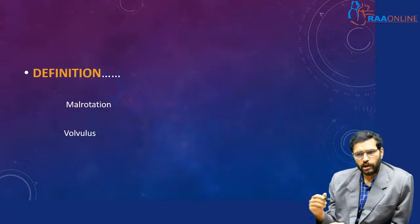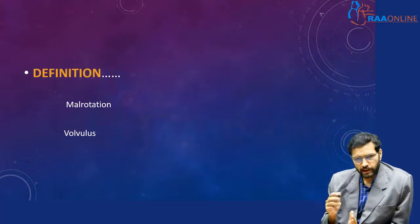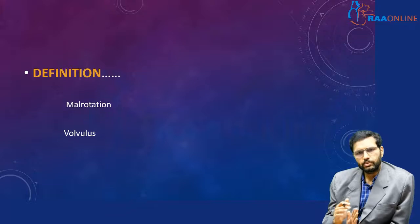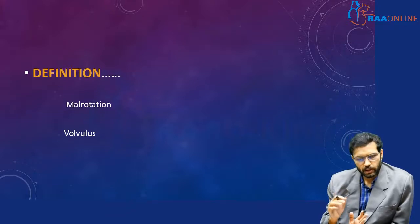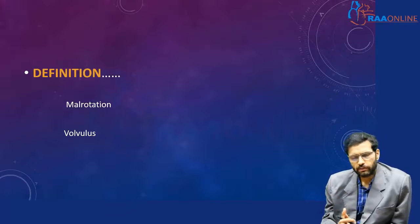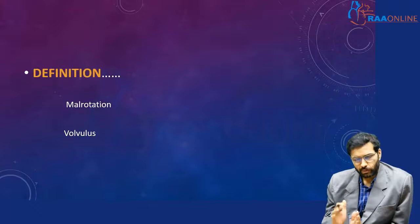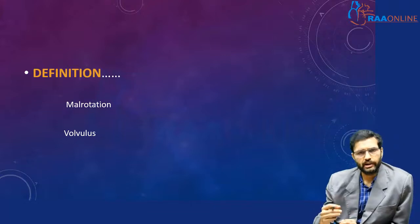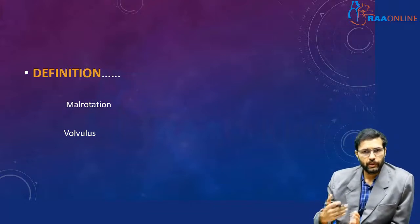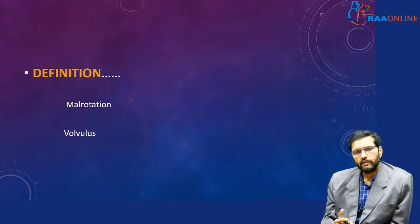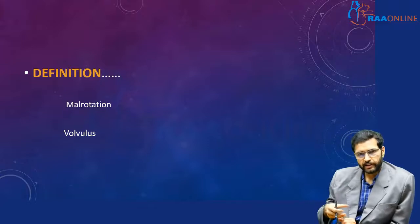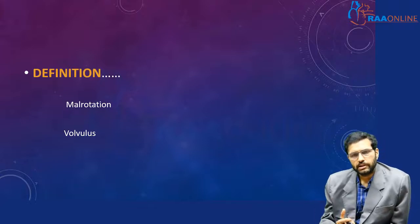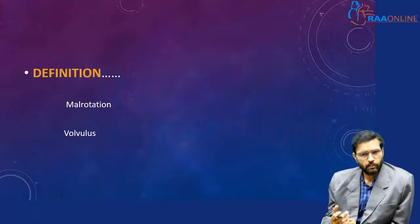So what exactly is the definition? To understand this topic in detail, you need to know two important terms. Malrotation: normally the gut undergoes an extracoelomic ventral herniation, rotates, and then enters back into the cavity. When this rotation is abnormal, we term it as malrotation of midgut.